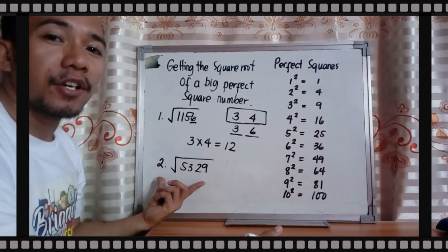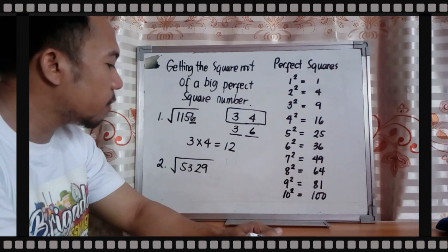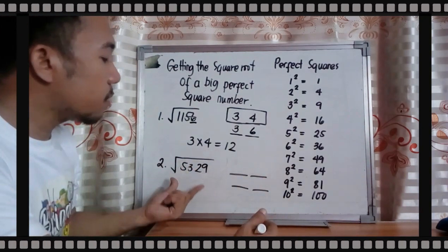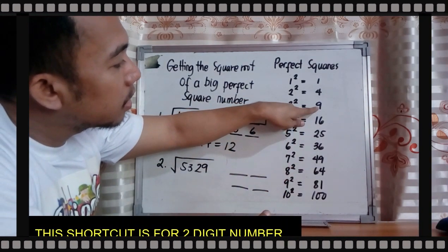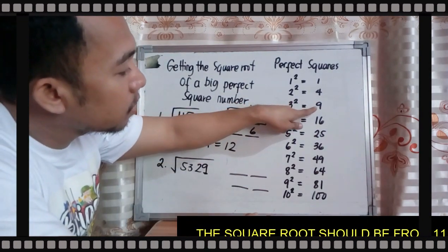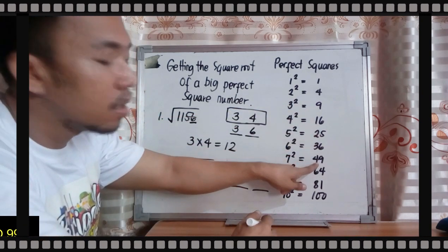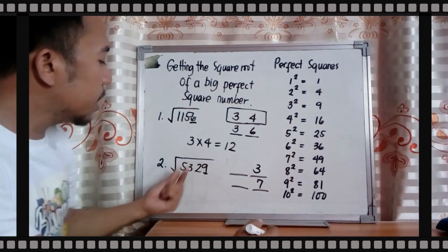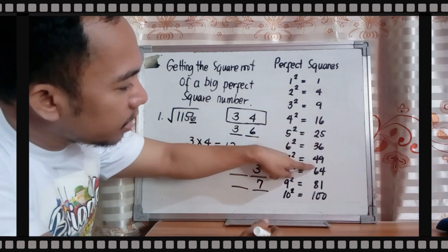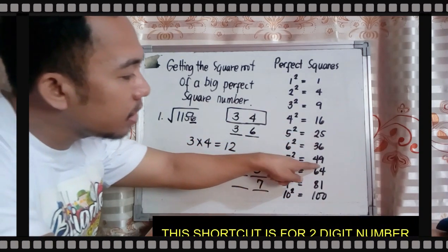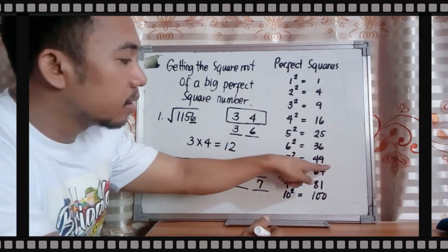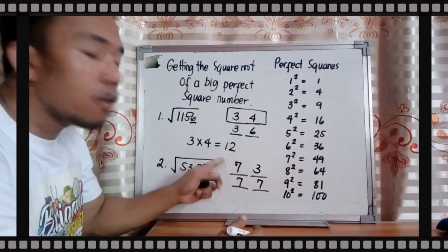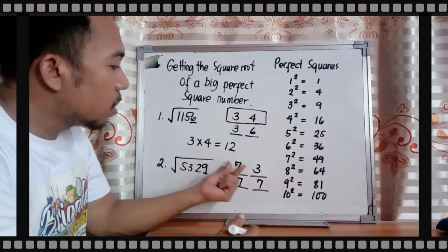Another example — a bigger one. The square root of 5,329. What will be the ones digit of the square root? The last digit is 9, so it's either 3 or 7. Now look at the first two digits: 53. Since 64 is more than 53, you go up to 49, so your tens digit will be 7.